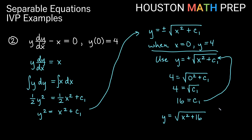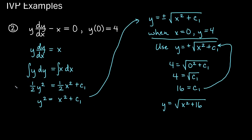One thing to note: some people solve for their constant at different points once they get a general solution. They may solve c1 first and then simplify, or simplify first and then solve c1 — either is fine. For example, if you had solved for the constant at the earlier step before taking the square root, you would have gotten c1 equals 8. But working forward from that point using 8, you would arrive at the same final answer. So you don't need to worry about solving c at a different step giving you something different.